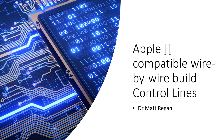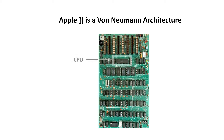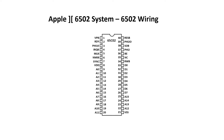Apple II compatible wire-by-wire build: the control lines. I'm Dr. Matt Regan. Alright, so we're getting into the home straight before we can do our first bring-up. Let's focus back on the 6502 microprocessor and see what still needs to be connected. First, we have to look at what we've connected so far. VDD and VSS, which are the 5-volt and ground supply respectively, were connected first.